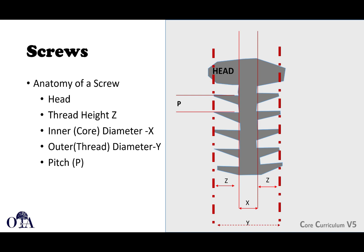Let's talk about the anatomy of a screw. You have the screw head, where you engage the screw. Thread height is the distance Z — the distance between the core and the outer perimeter of the threads. The core diameter, X, is what you would drill your pilot hole for. The outer thread diameter, Y, is what you'd use for a gliding hole — where your screw is trying to get purchase.